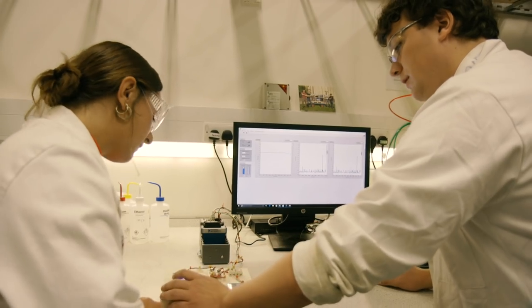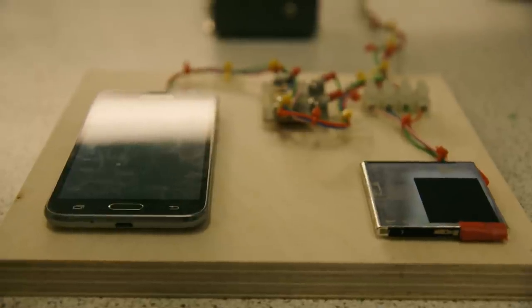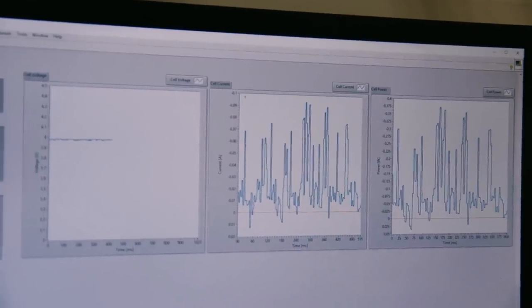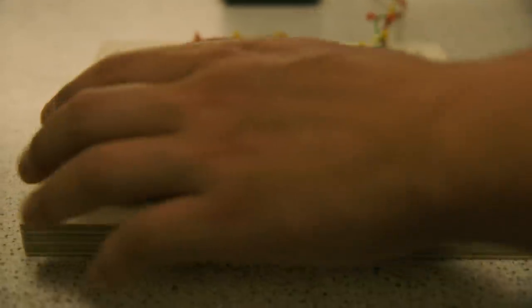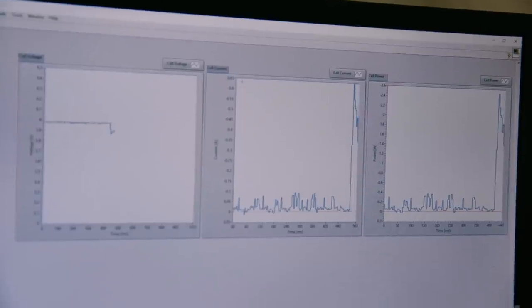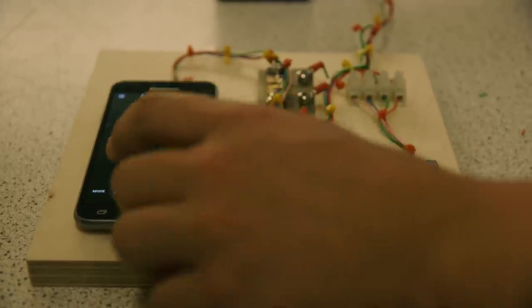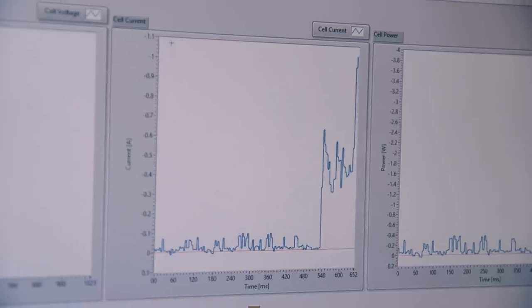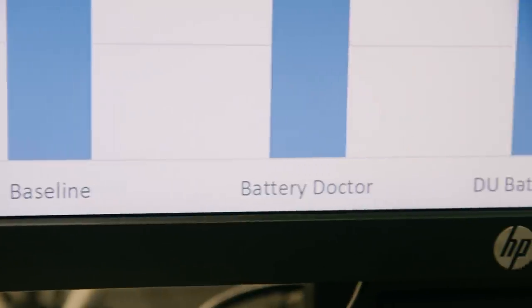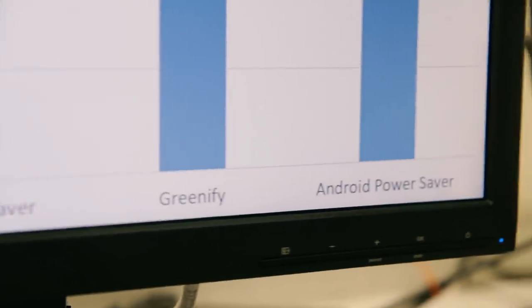So to start off, the team here took a brand spanking new Samsung Galaxy J3 and hot-wired it. We have the voltage, the current and the power. So if we turn the phone on from idle, we can see that the current to the phone, the power to the phone increases. And then if we do something that's quite power hungry, so for example taking a photo with the flash on, you can see that the power spikes massively.